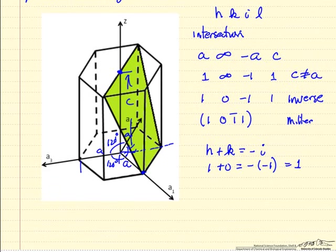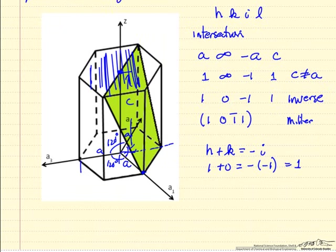We can also look at another plane. We can look at this plane that I colored in here, and we would see Miller indices. The intersections are infinity, infinity, infinity, and C.